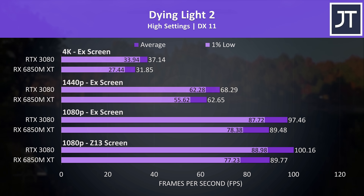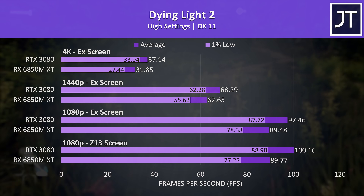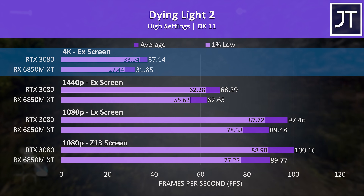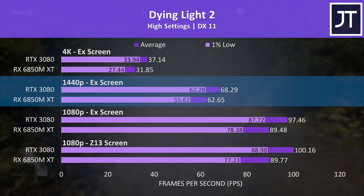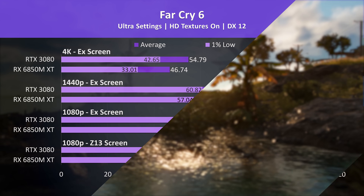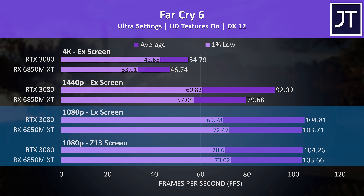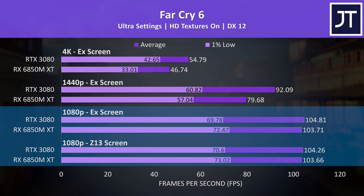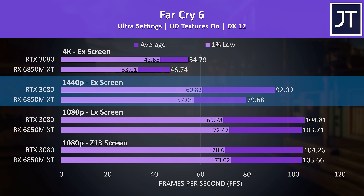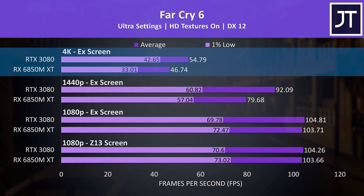The gaps weren't quite as big in Dying Light 2, but the RTX 3080 was still ahead regardless of resolution. Neither was a smooth experience at 4K high settings, but we could use FSR or DLSS to boost performance. Both were still able to surpass 60 FPS at 1440p, with the 3080 just 6 FPS ahead. Far Cry 6 was reaching about the same average frame rate at 1080p with a slight edge to the 6850M XT in 1% lows, but the 3080 was reaching 16% higher average FPS at 1440p and 17% higher at 4K.